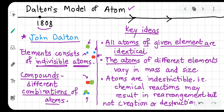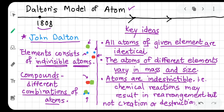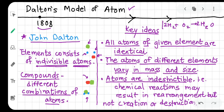The atoms of different elements vary in mass and size. Dalton also stated that atoms are indestructible — you cannot destroy them, nor create new ones. In a chemical reaction, only their arrangement changes. For example, balancing 2H₂ + O₂ → 2H₂O shows that the number of atoms before and after the reaction remains the same. No atom is destroyed, no new atom is created. This was a major breakthrough that Dalton gave us.